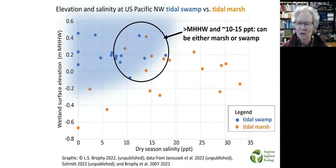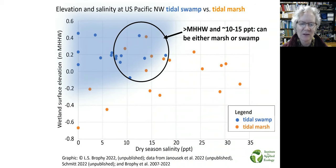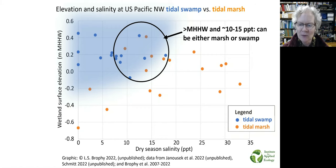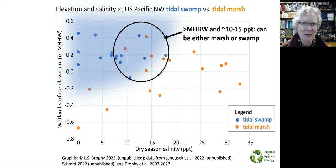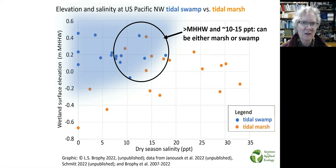This circle surrounds the zone above mean higher high water with salinities around 10 to 15 parts per thousand. Within this zone we find both tidal swamps and tidal marshes, and this isn't a narrow transition zone. The land area that falls within this zone is actually very extensive in our estuaries.